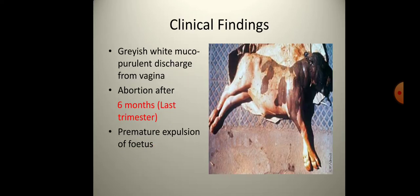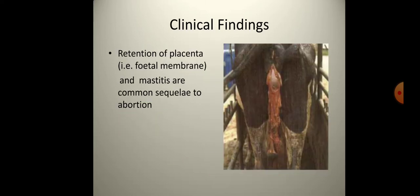Clinical findings include mucopurulent discharge from the vagina and premature expulsion of the fetus. Abortion occurs in the last trimester, around six months. Retention of placenta and mastitis are common sequelae to abortion. Swelling of joints, hygroma, and bursitis are also observed.